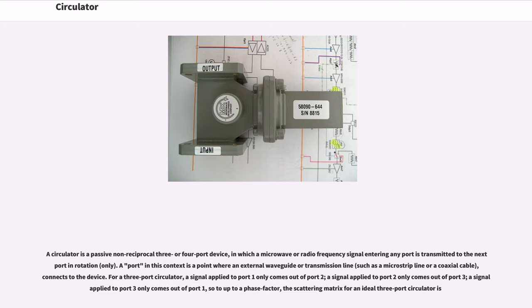A signal applied to port 2 only comes out of port 3, a signal applied to port 3 only comes out of port 1, so up to a phase factor, the scattering matrix for an ideal 3 port circulator is.